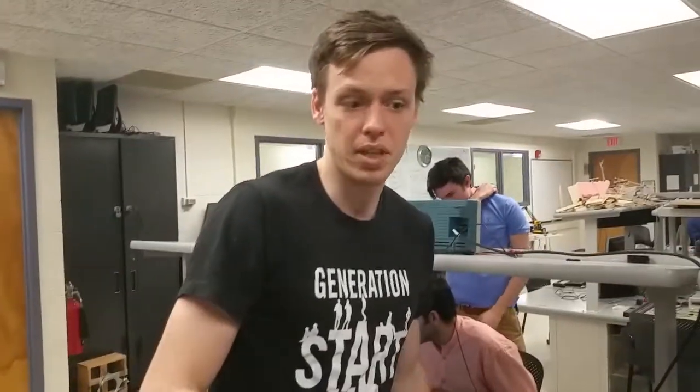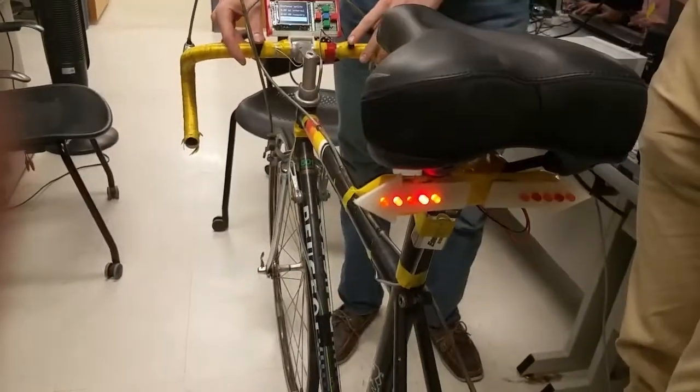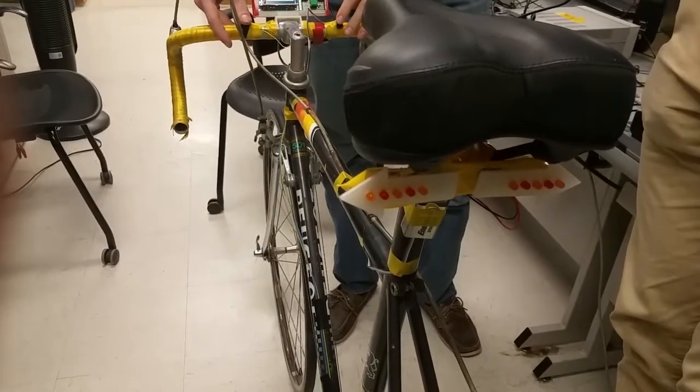Hi, I'd like to demo part of the bike. We have some blinkers on the bike. On the front we have two buttons which turn on the blinkers, one on the left and then also one on the right.